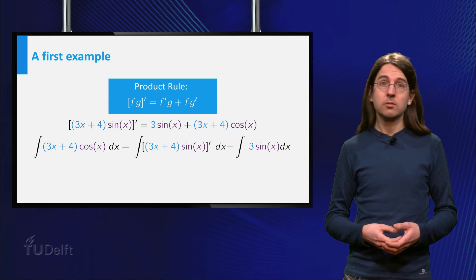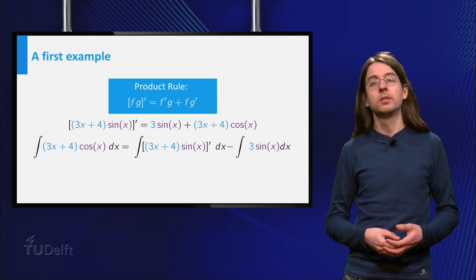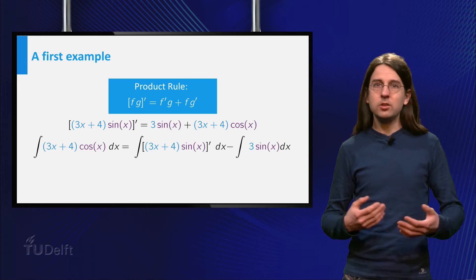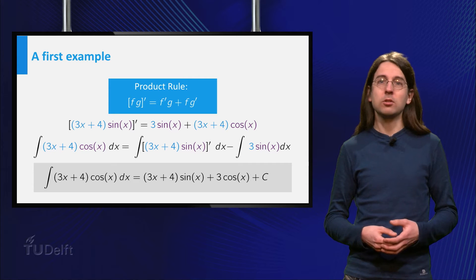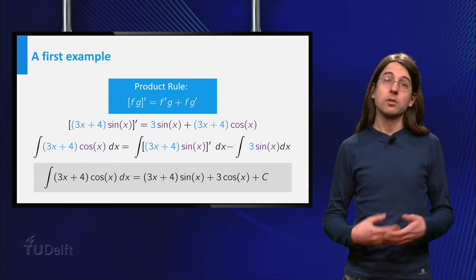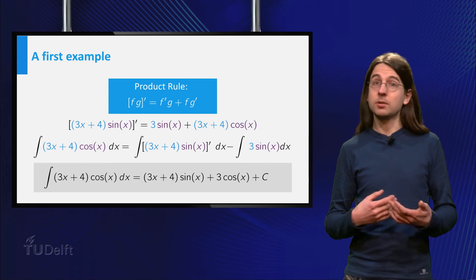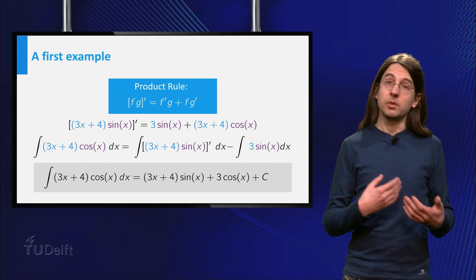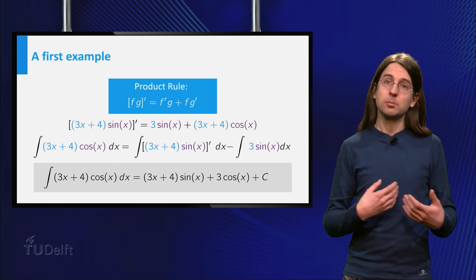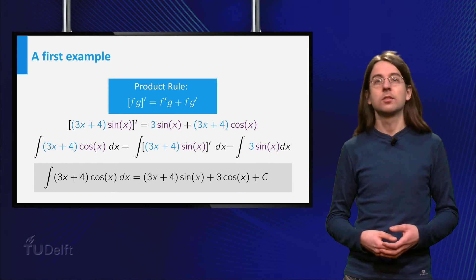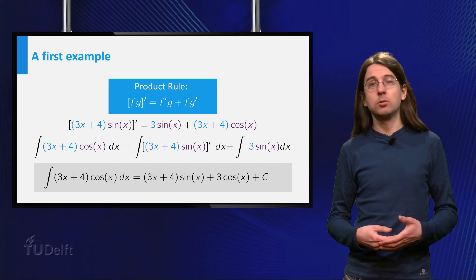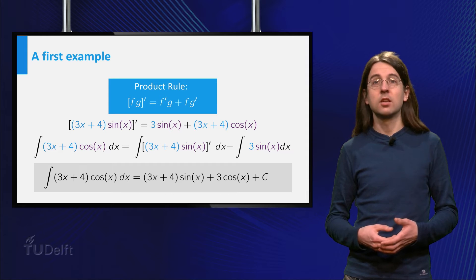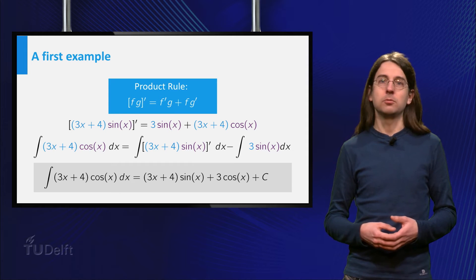Now we know that a primitive function of a derivative equals the original function. Moreover, we know a primitive function of the sine. Thus we obtain that the integral of (3x + 4) times cosine of x equals (3x + 4) times sine of x plus 3 times cosine of x plus a constant. We have just calculated the integral of the product (3x + 4) times cosine of x by reversing the product rule.